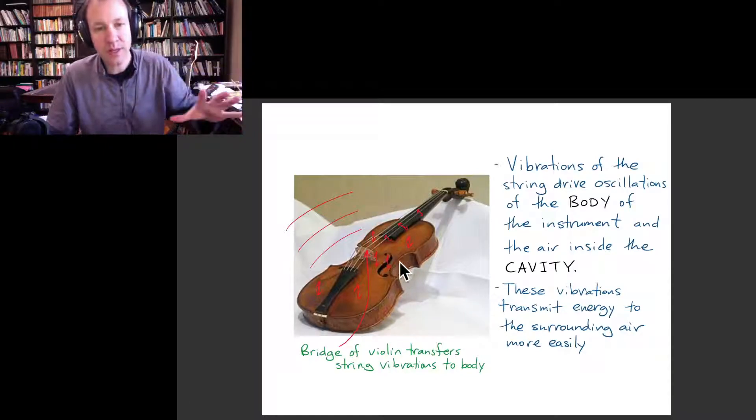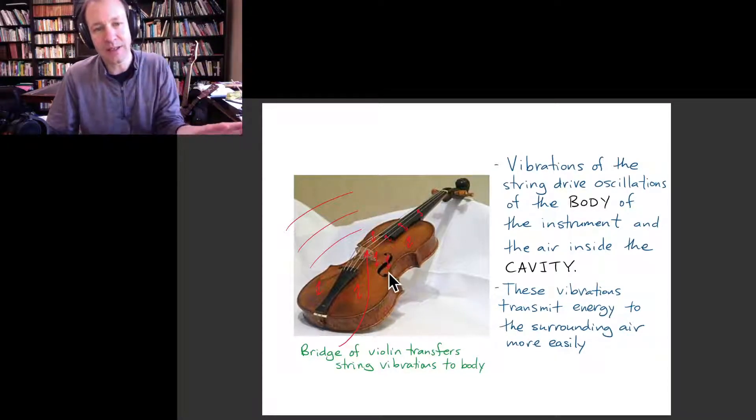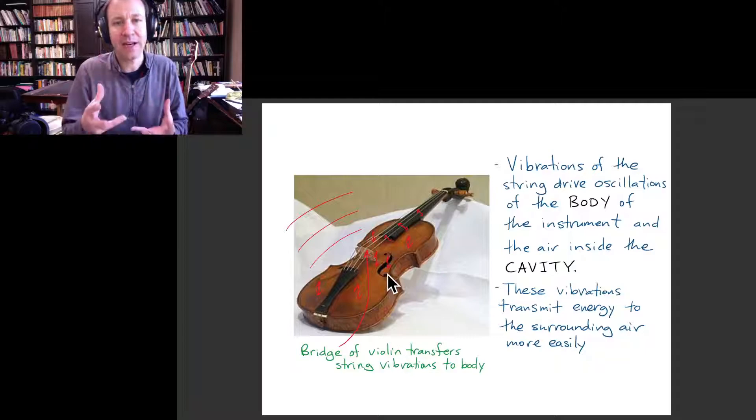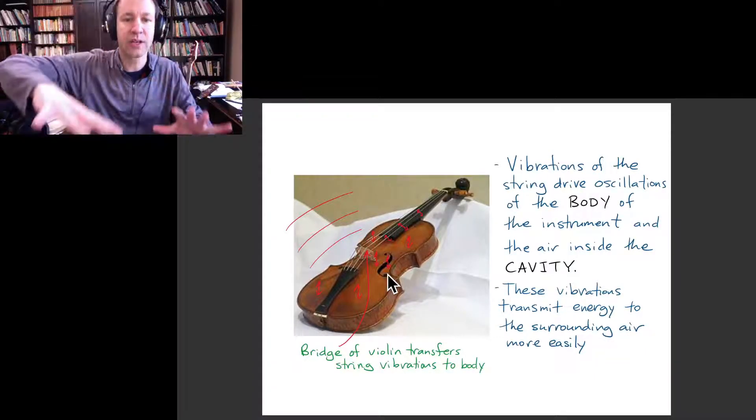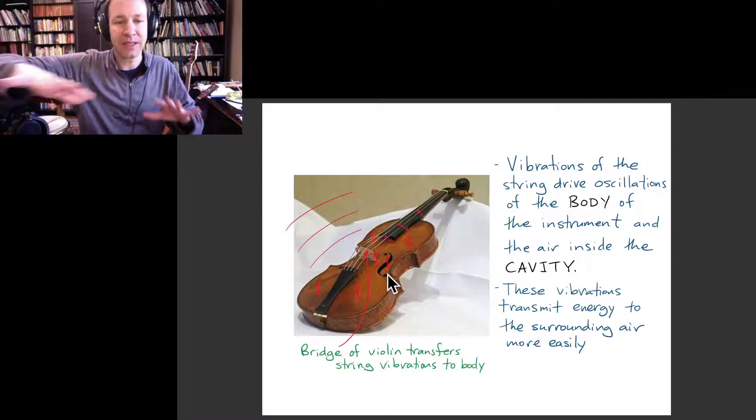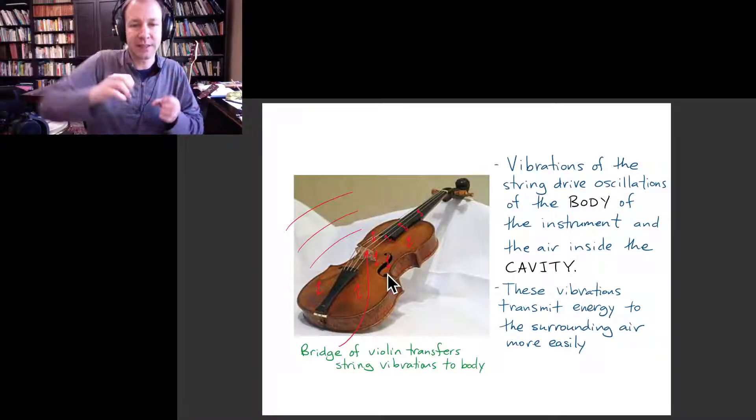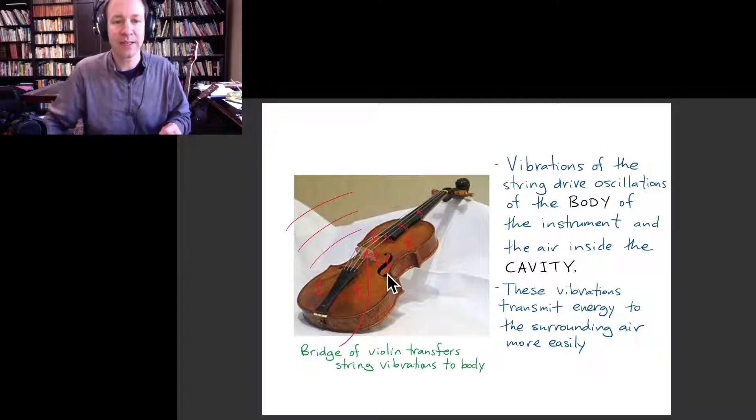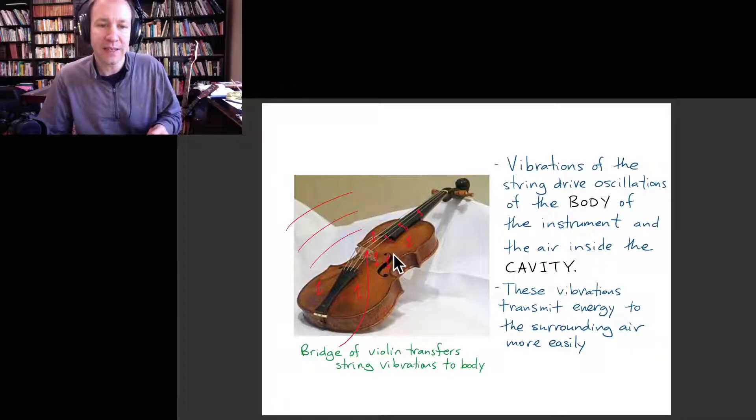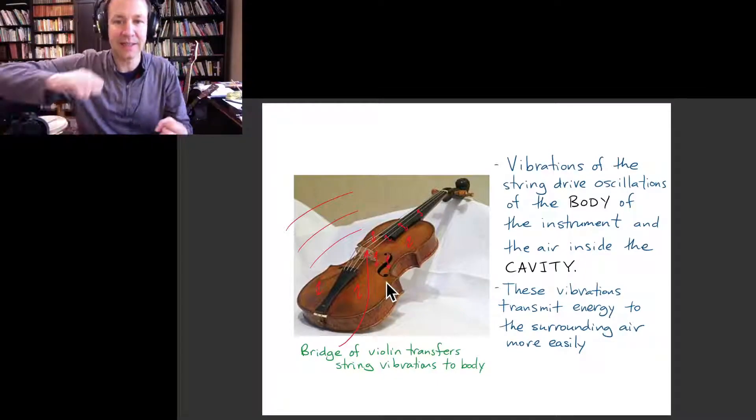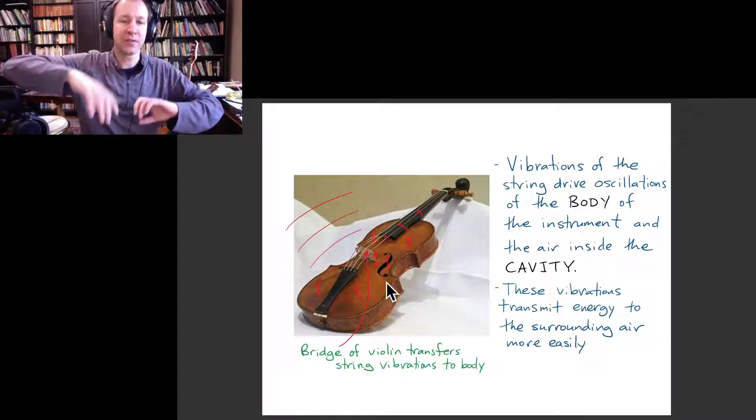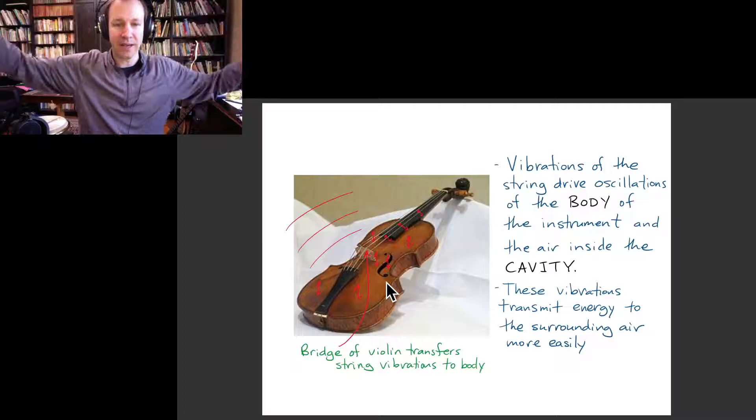And so there's even more than that, so the instrument is hollow. And so you have air inside the instrument, and that can also vibrate so that the motion of the top plate of the violin causes the air inside the instrument to vibrate. And that's open to the outside here. And so the vibrations of the air inside the instrument also can transmit energy to the surrounding air.